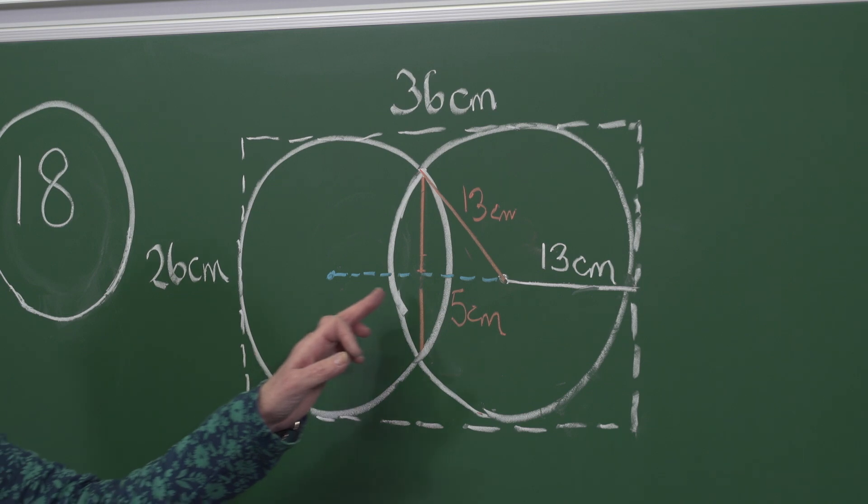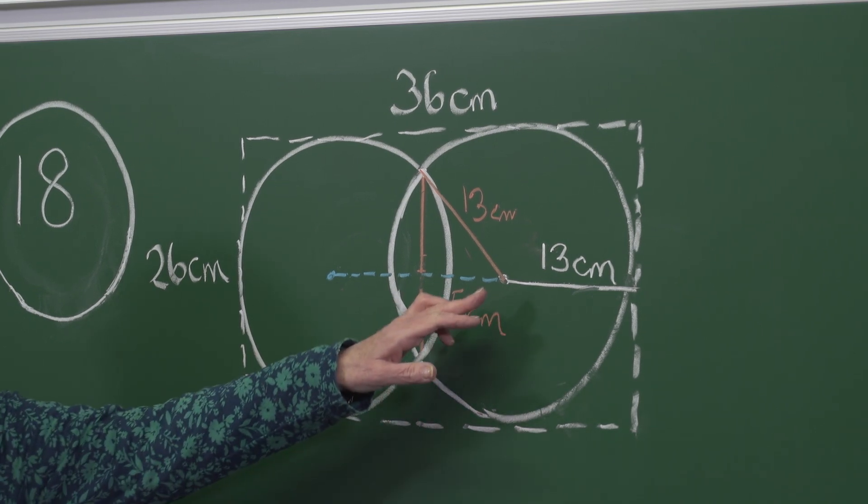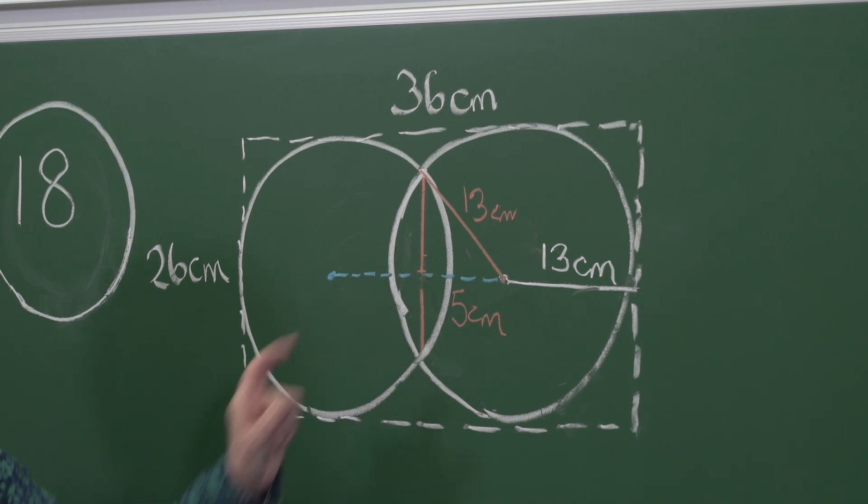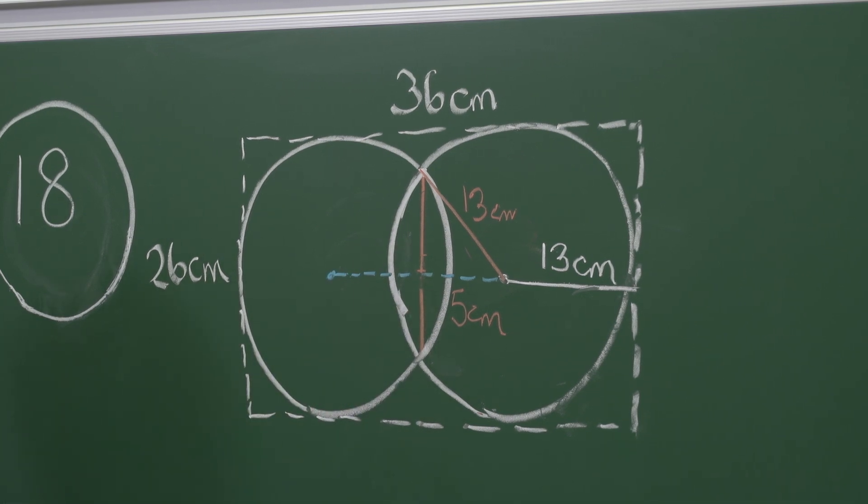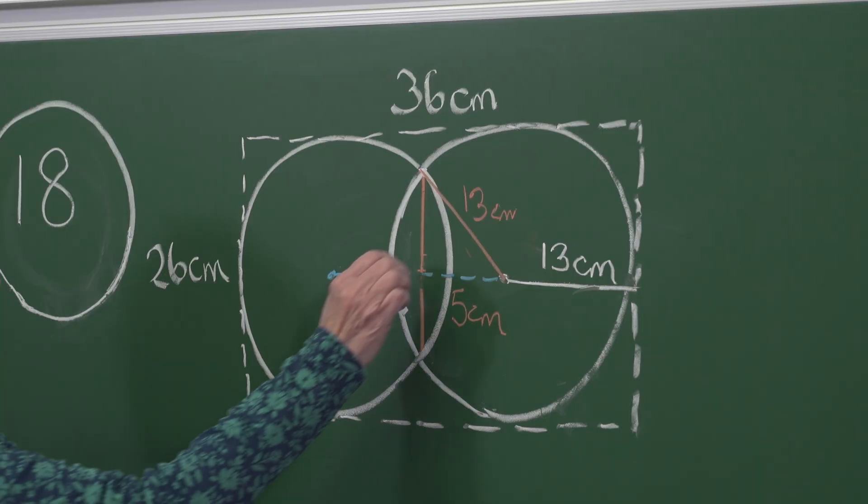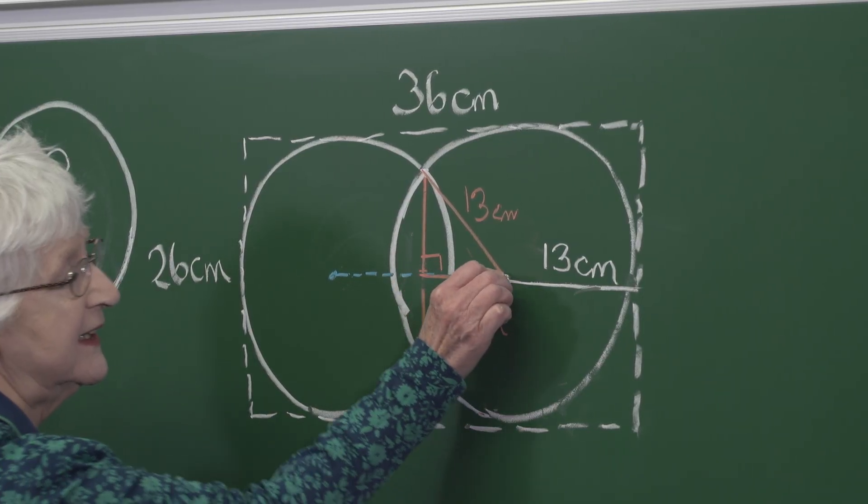Now this line of centers bisects the red line and so these two lines are of the same length and are at right angles to each other. So that means in this red triangle,